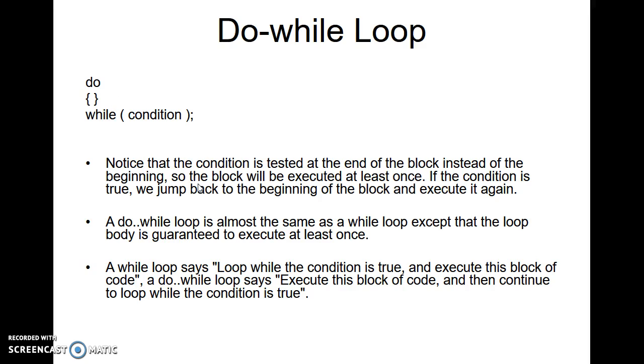Notice that the condition is tested at the end of the block instead of the beginning, so the block will be executed at least once. If the condition is true, we jump back to the beginning of the block and execute it again. A do-while loop is almost the same as a while loop except that the loop body is guaranteed to execute at least once. A while loop says 'loop while the condition is true and execute this block of code.' A do-while loop says 'execute this block of code and then continue to loop while the condition is true.'